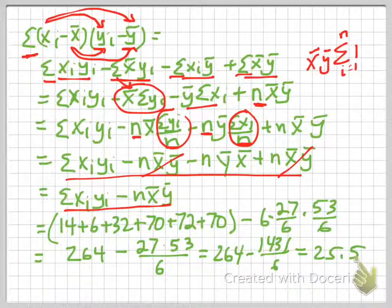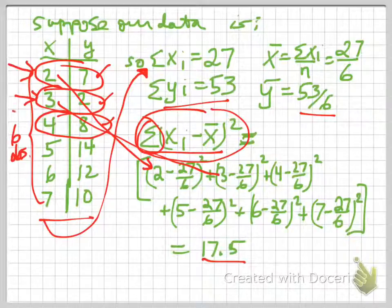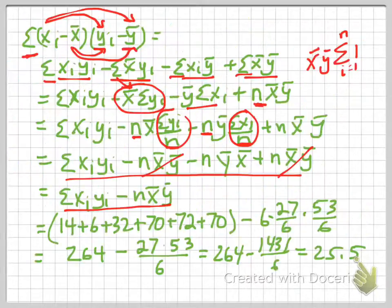And so now I add up x times y. So if I go back to my table, x times y is 2 times 7 is 14, 3 times 2 is 6, 4 times 8 is 32, 5 times 14 is 70, and so on.